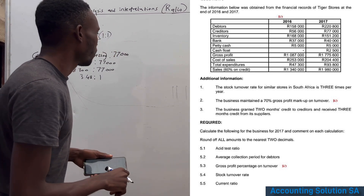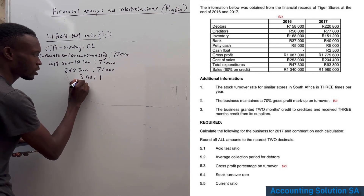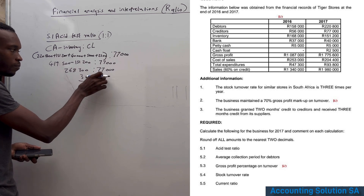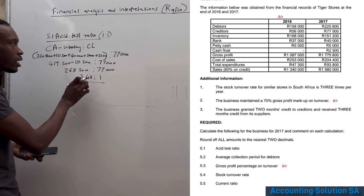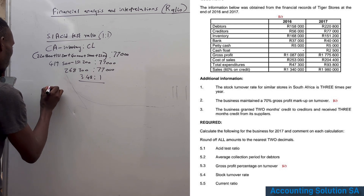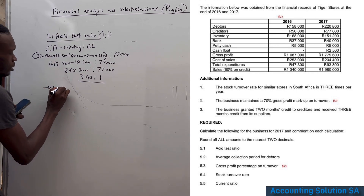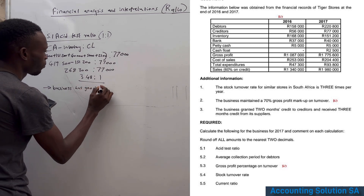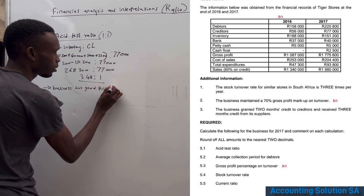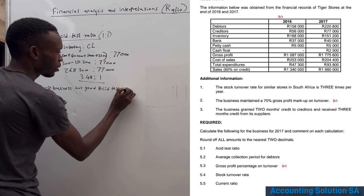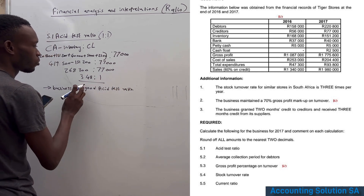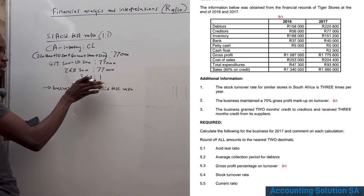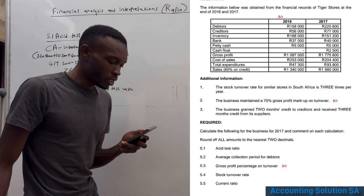This is a very good result. Our assets are greater than liabilities by 3.48 times, so the business is in a good position. The norm is 1:1 and our result is 3.48, so the acid test ratio is favourable.